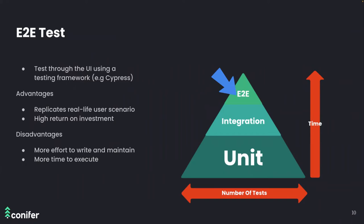The third type is end-to-end tests. It's called end-to-end because the application is tested through the user interface to replicate real-world scenarios from start to finish. Real-life user scenarios are fairly straightforward to reproduce from an end-to-end perspective. End-to-end tests are written using established testing frameworks like Cypress. The disadvantage is that end-to-end tests require a lot more effort to write, are more difficult to maintain, and take a lot more time to execute.